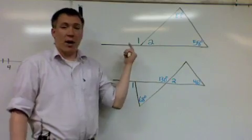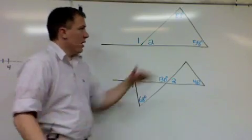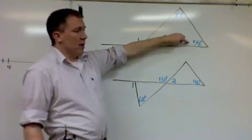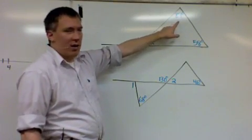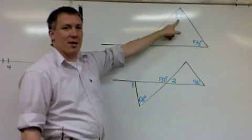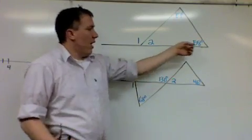We can use this to solve lots of different problems. Now in this triangle, this angle is 58 degrees. You may not be able to read it because of the glare, but that says 87 degrees, and this is angle 2. So if I want to discover what angle 2 is, I have to find out what this needs to be to make it add up to 180.